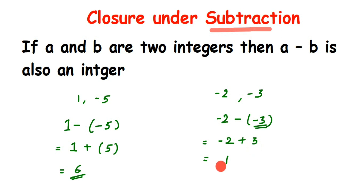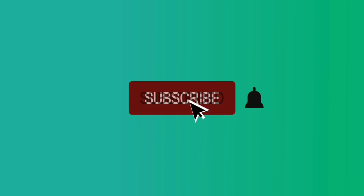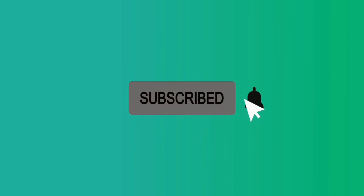We can conclude that for integers, the closure property is satisfied, or we can say that integers are closed under subtraction. I hope it's clear. If you have any questions or doubts, you can drop a comment. Thank you so much for watching.